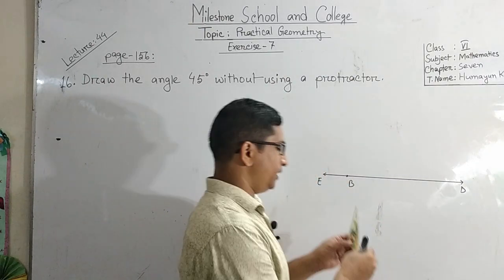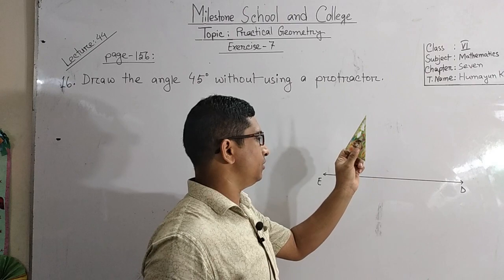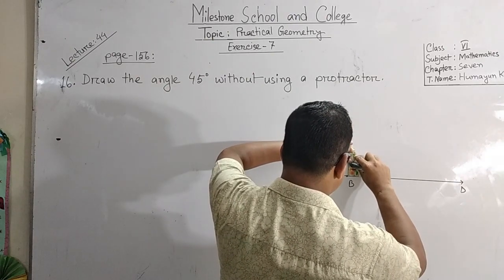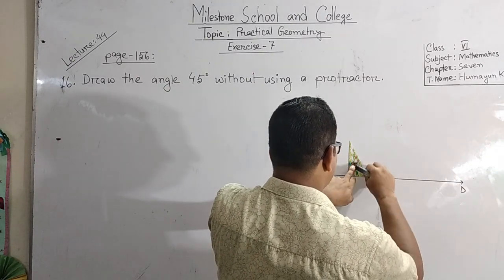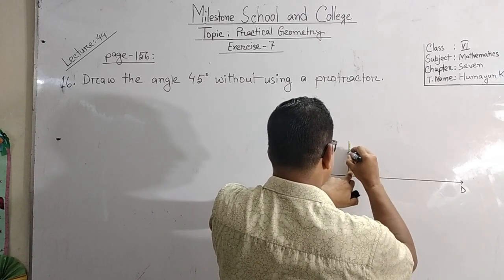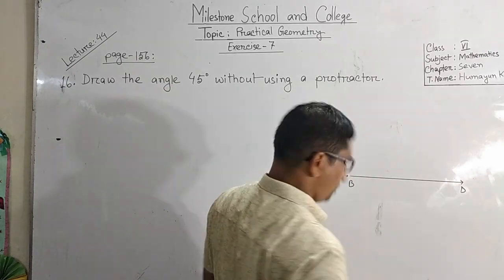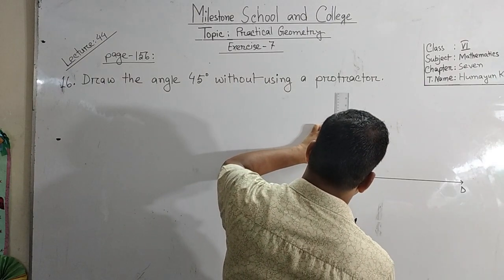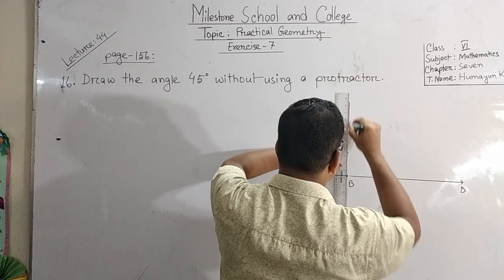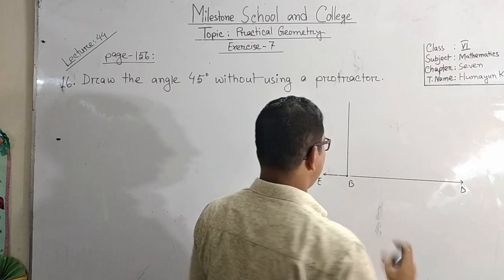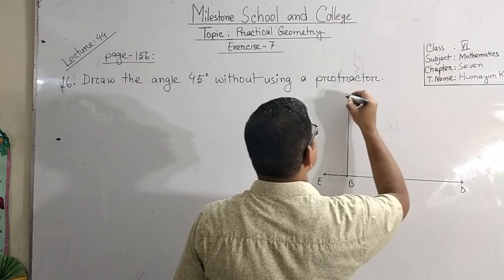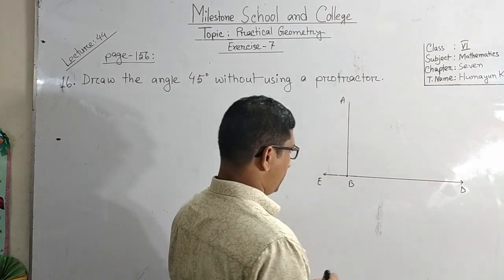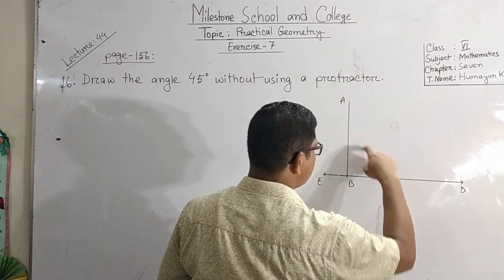Now look at here - this is the set square. We use this set square. By using this set square, draw a perpendicular. Take a point and join these two points. Suppose it is A. Now AB is perpendicular on DE. This angle ABD is a 90 degree angle.